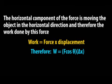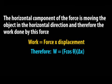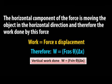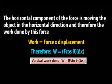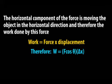If the force is moving the object in a vertical direction, then the work done becomes W = F·sinθ · Δx. Immediately when you see that formula, you know we are talking about the work done in the vertical direction. Let's now look at some questions.